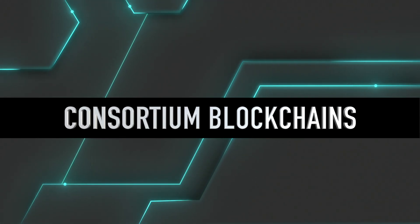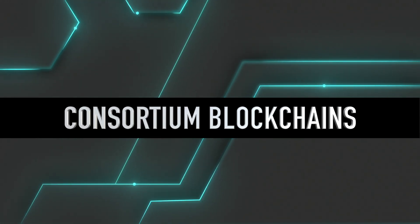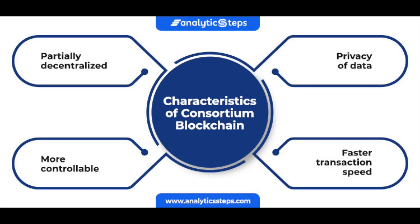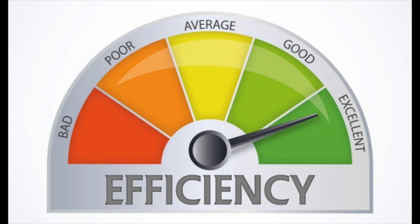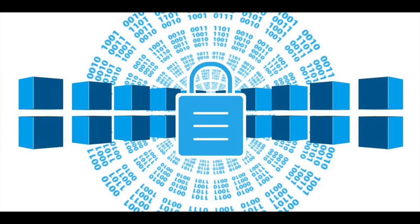The last type is a consortium blockchain. This is a permission-based network governed by a group of organizations. Splitting the control up over multiple entities rather than just one — like private blockchains — allows for more decentralization and security. In comparison to public networks, consortium blockchains are usually more scalable and highly efficient. These blockchains also offer access control like hybrid and private blockchains do. The disadvantages are that they can still be compromised if a small number of their entities are breached, and the high amount of regulation in this style of blockchain can also end up impairing its core functionality.